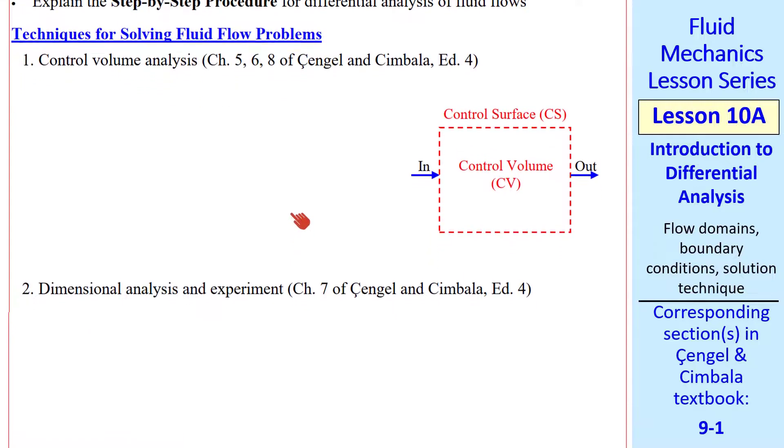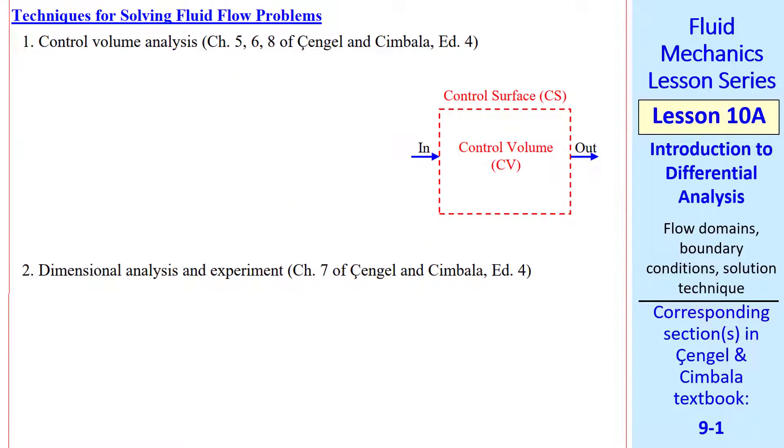There are three main techniques for solving fluid flow problems. We've already discussed the first two, control volume analysis and dimensional analysis with experiment. In a control volume analysis, we set up our control volume, the boundary of which is called the control surface, and we look at quantities that affect the control volume, such as the sum of all forces, mass flow rates in and out, rate of heat transfer into or out of the control volume, and power supplied to or delivered by the control volume. We solve integral or control volume equations.